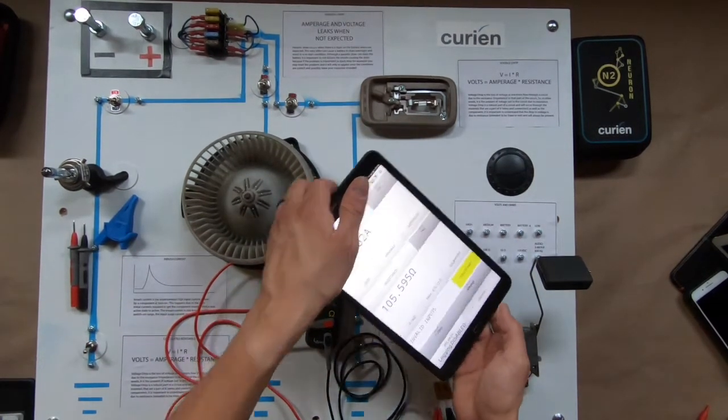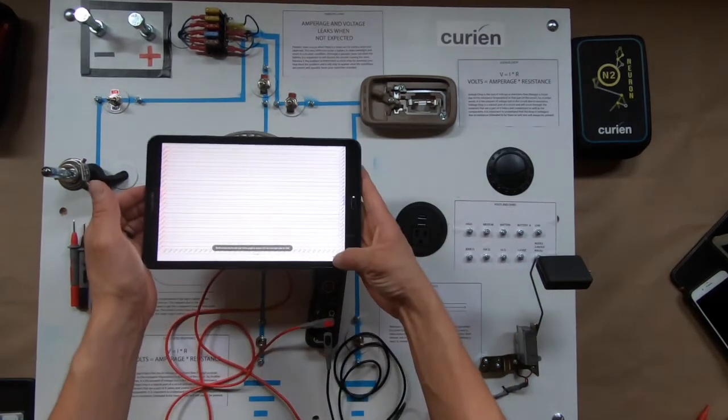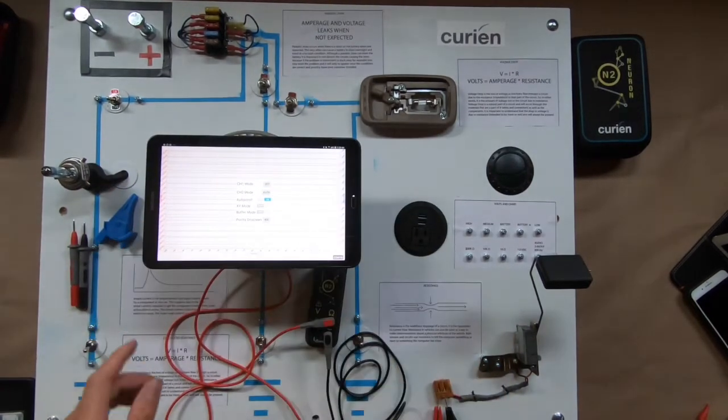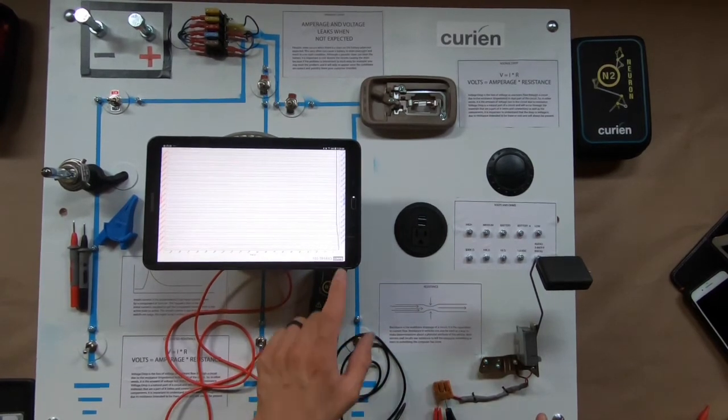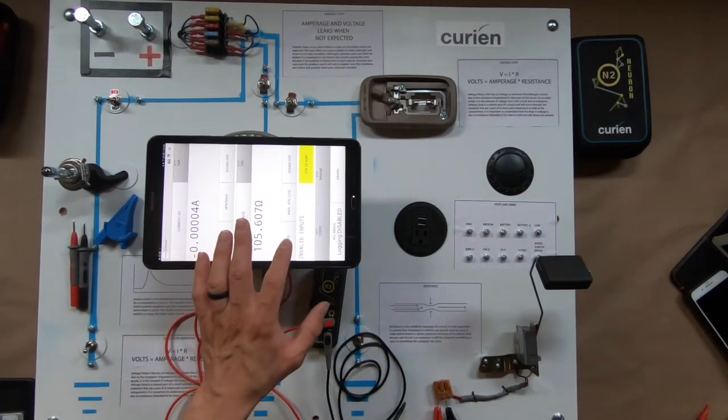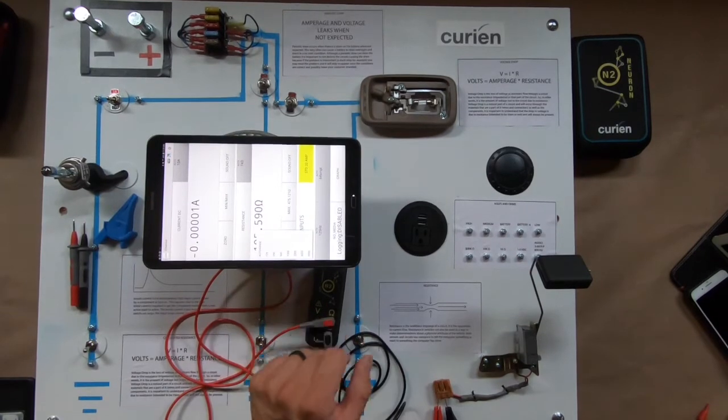But what I can do, and one of the great advantages of the N2, is I can graph what I'm looking at. So, in this case, we have our ohm measurements here, and before I do that, let's go ahead and kick up our sample rates. We're going to move that up to a thousand.